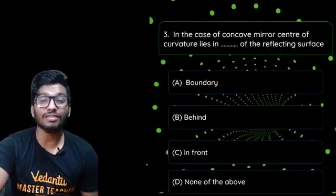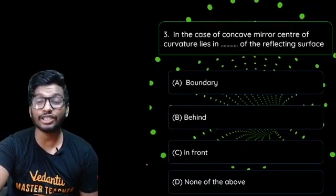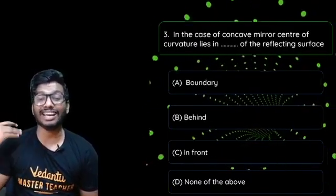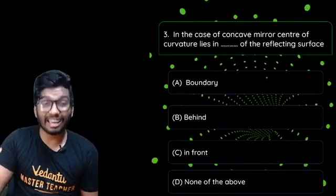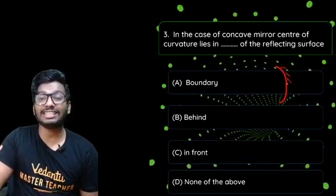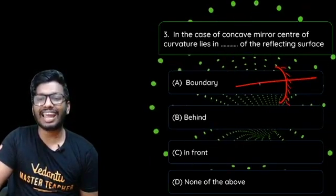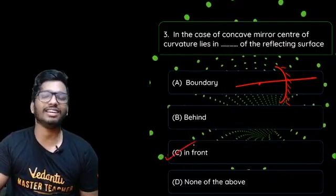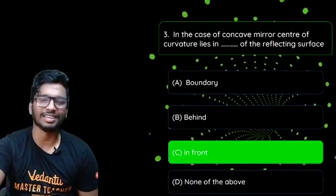Question 3: In the case of a concave mirror, the center of curvature lies in the dash of the reflective surface — is it in the boundary, behind, in front, or none of these? For a concave mirror, the center of curvature lies in front of the mirror. So the correct answer is option C — in front of the mirror.